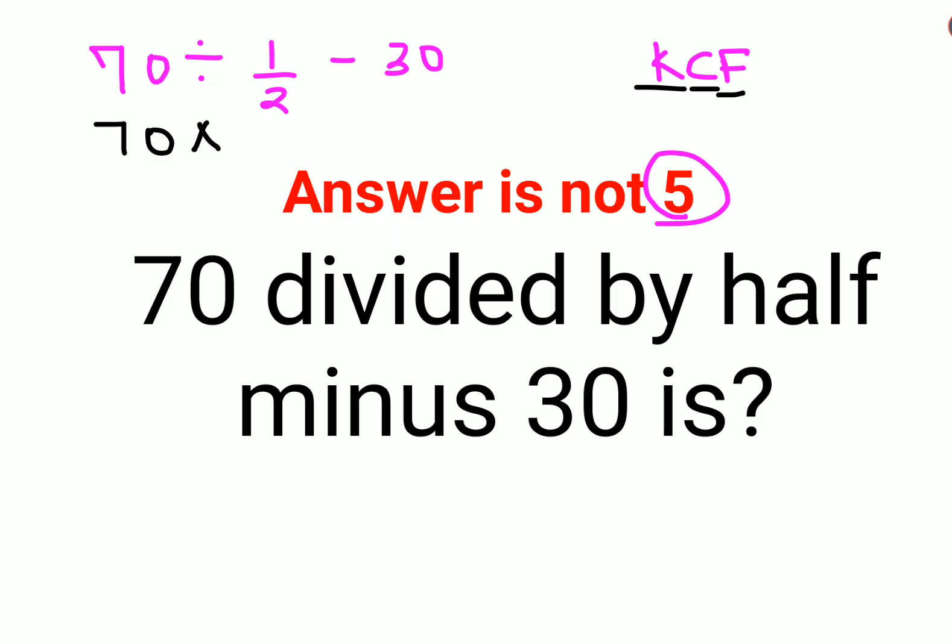So your flipping or reciprocal of half is nothing but 2 minus 30. So now your question is 70 into 2 which is 140 minus 30. Answer comes out to be 110.